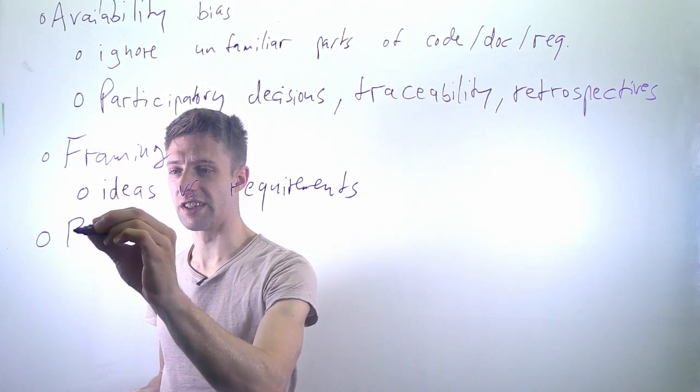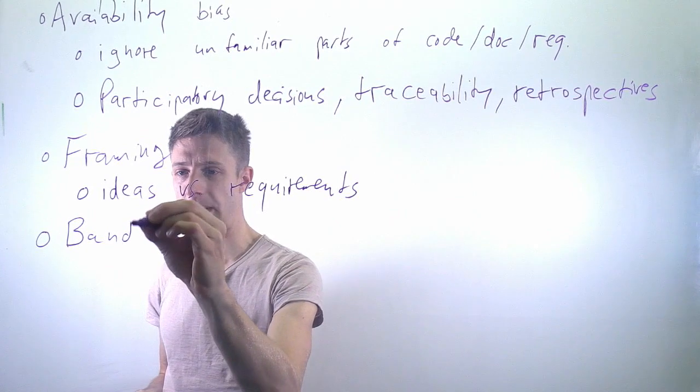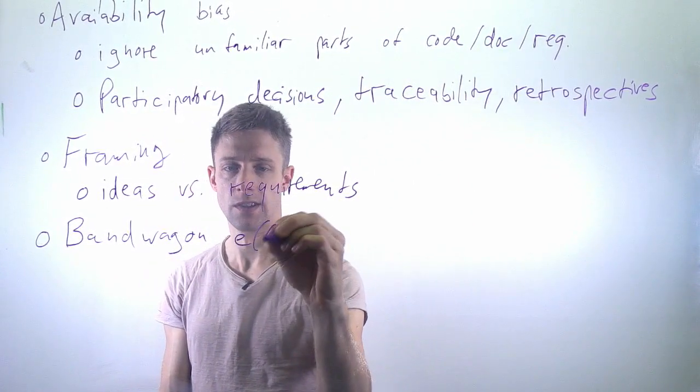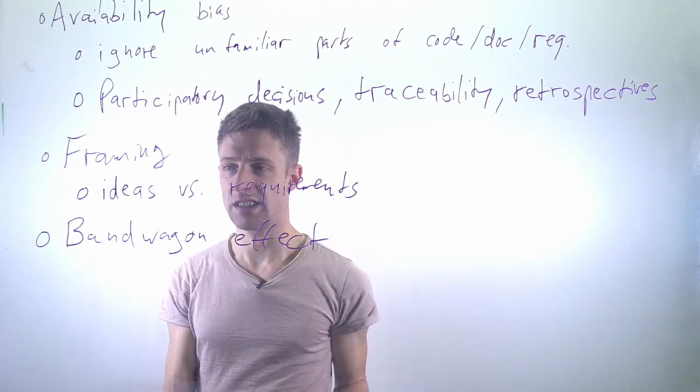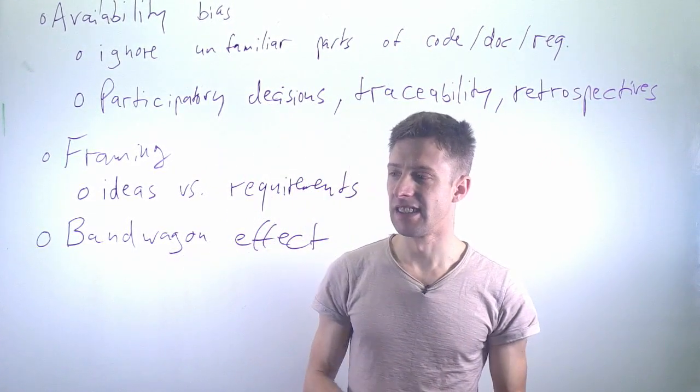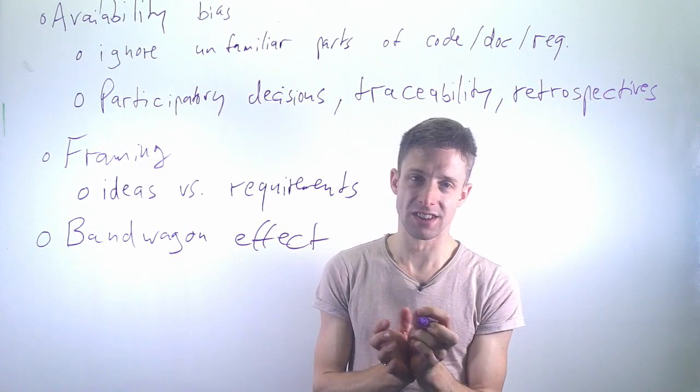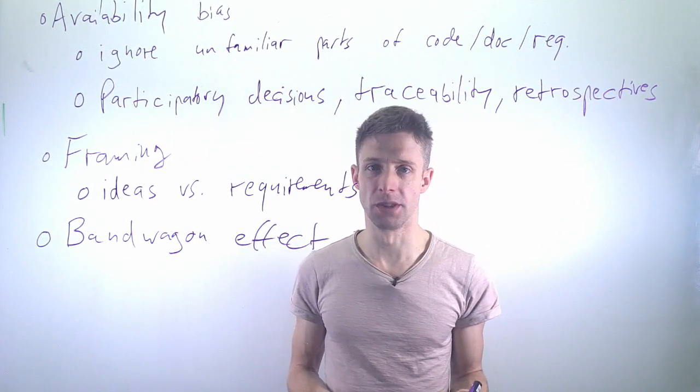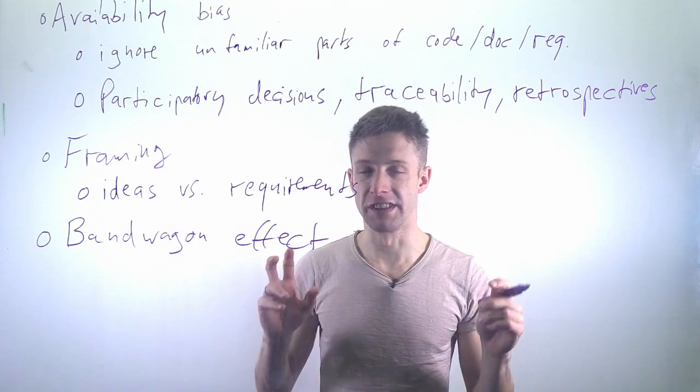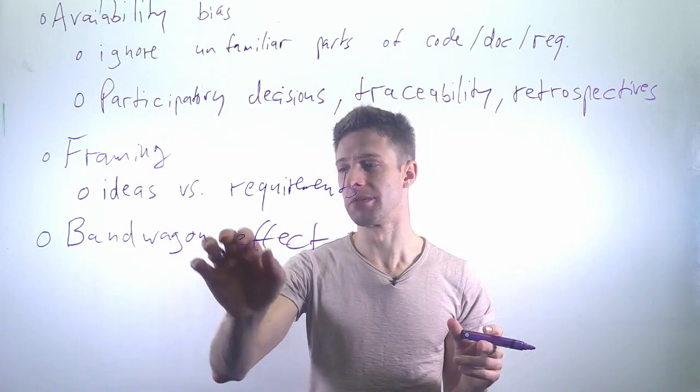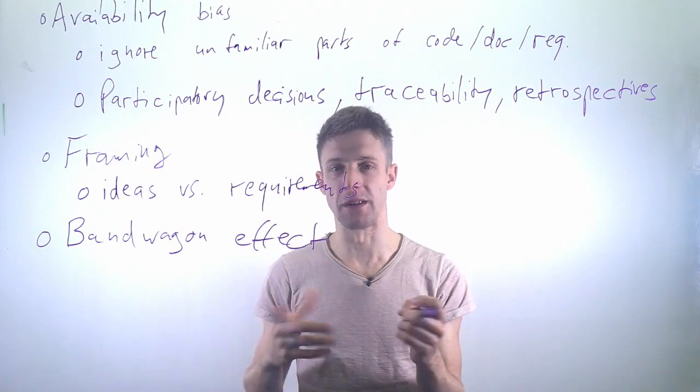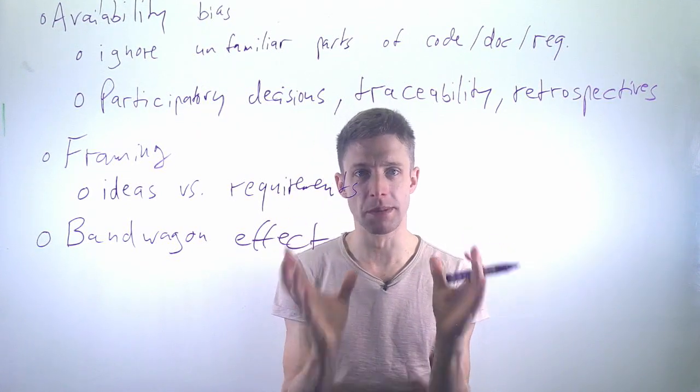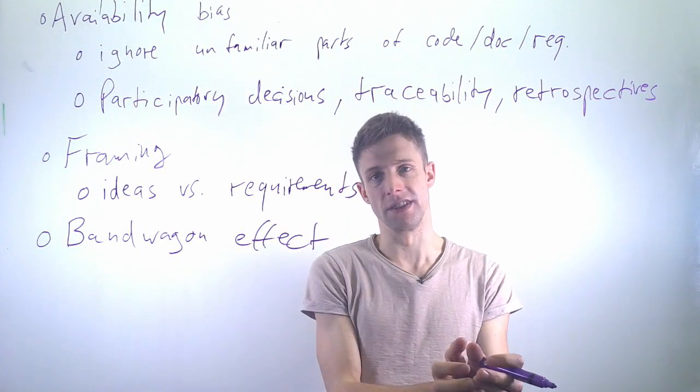Finally in our list of cognitive biases is the bandwagon effect. So that's the effect that in a group, people will adjust to the majority opinion or whatever they think is the majority opinion. So it's kind of this group think that is known sometimes - that there are a couple of people who have a very strong opinion, and then the group maybe perceives this as that's what the majority thinks, and they will adjust to this.